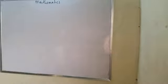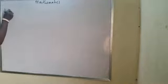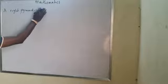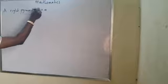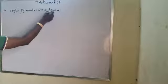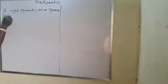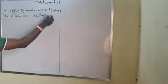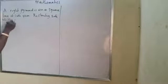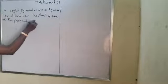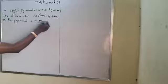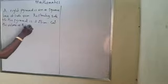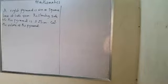Now let me give another example. A right pyramid on a square base of side 4 centimeters — the slant height of the pyramid is 2 root 3 centimeters. Calculate the volume of the pyramid.